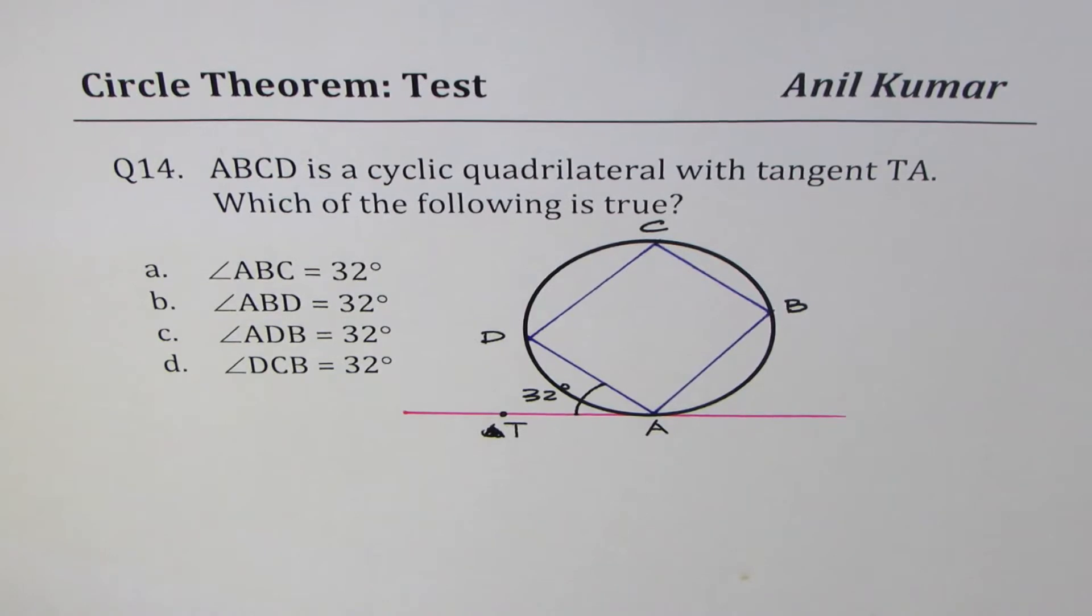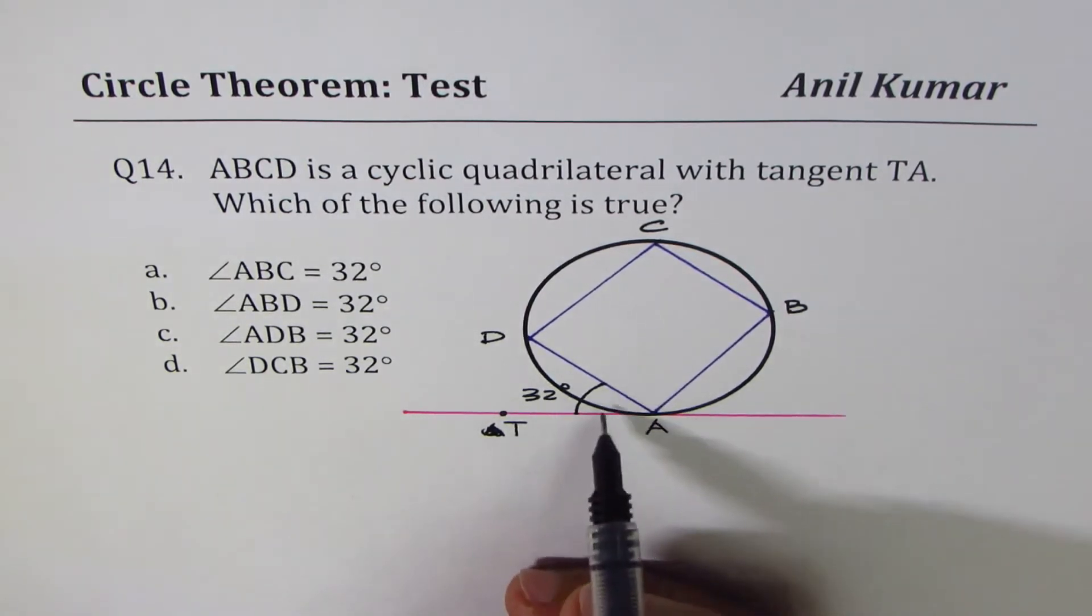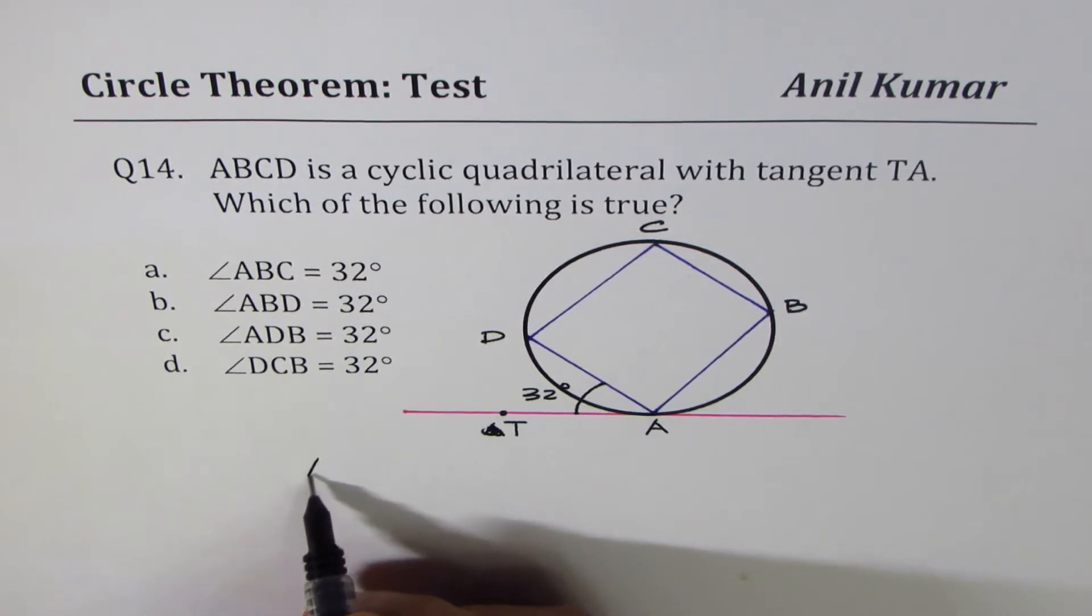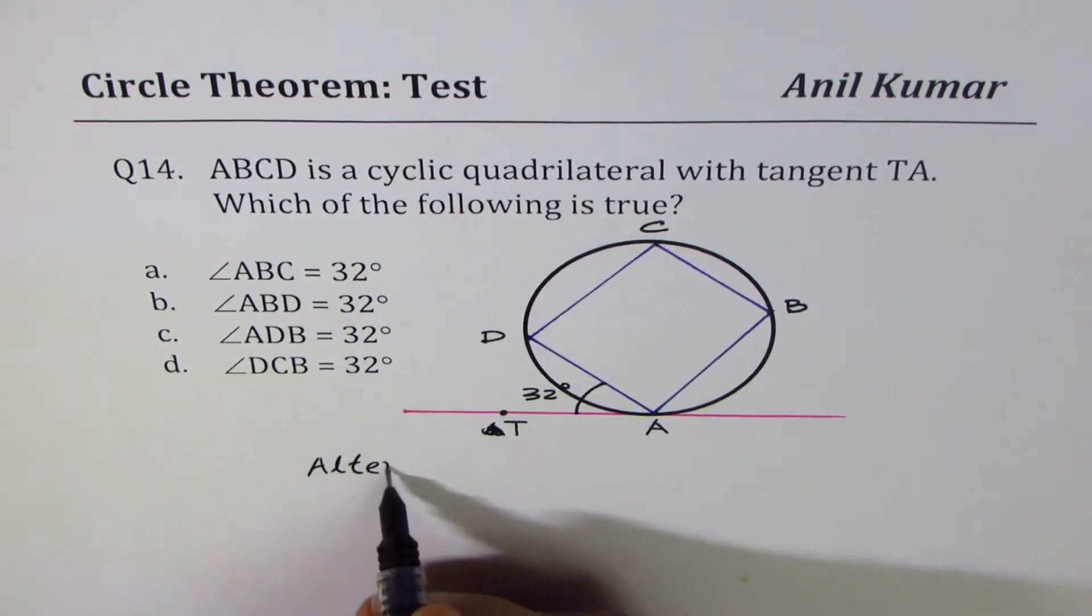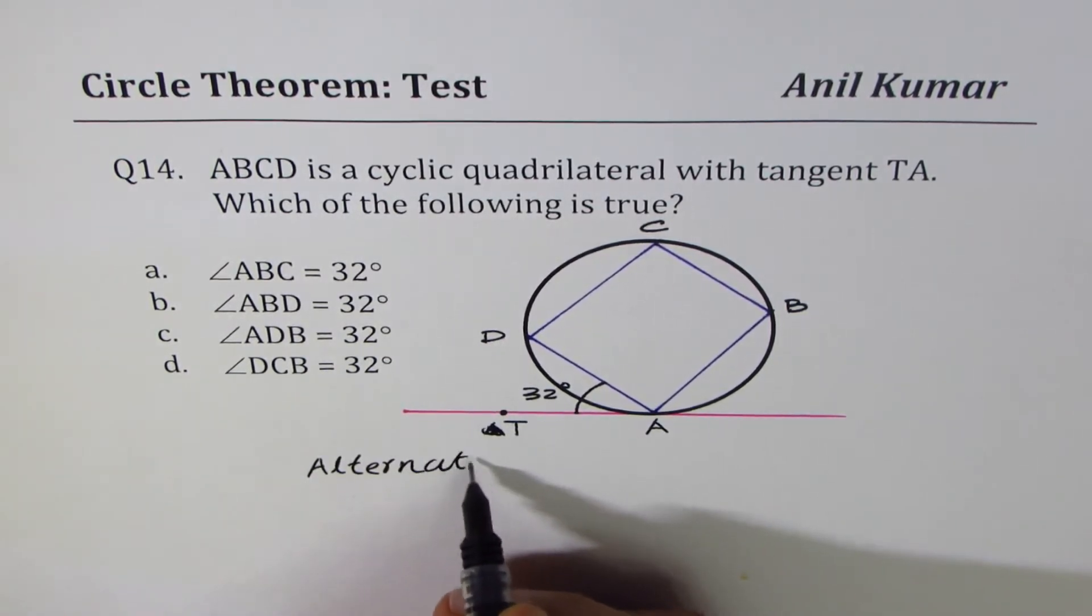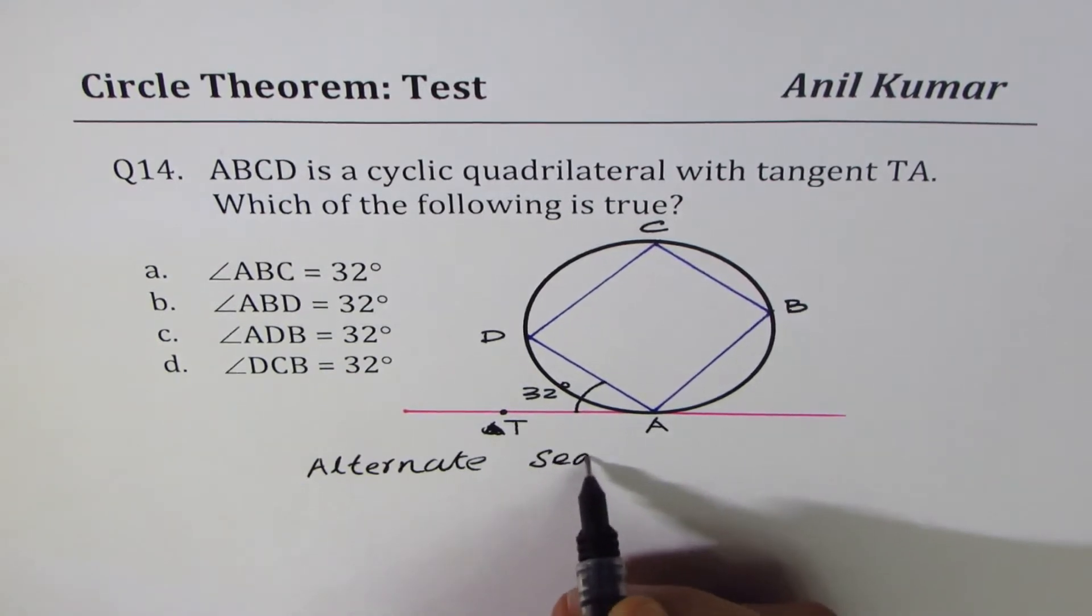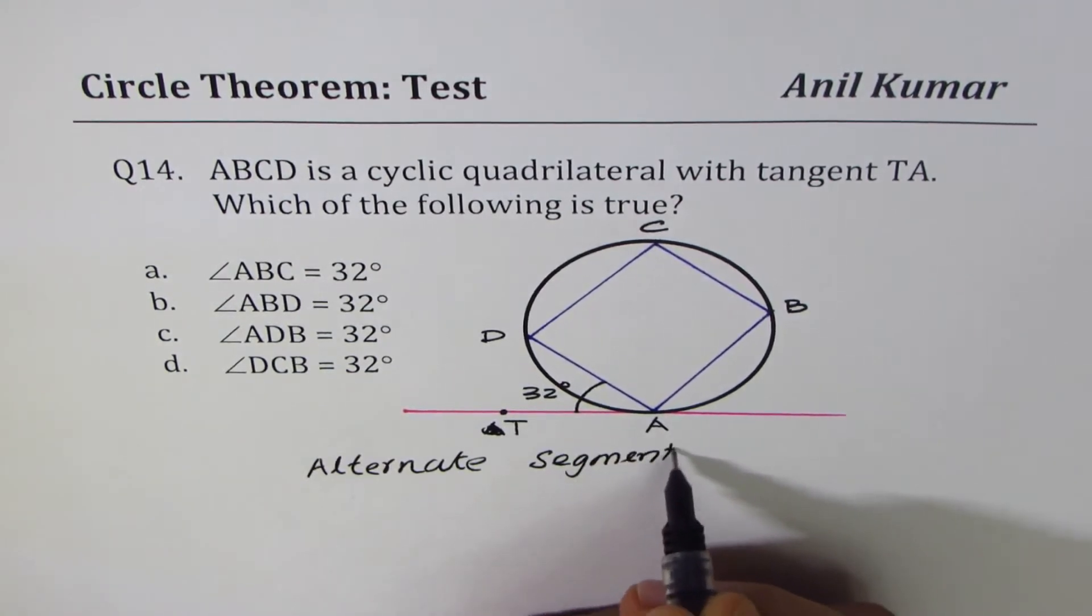Whenever you have a tangent with a chord and an angle in between them, we have to look for the alternate segment theorem.